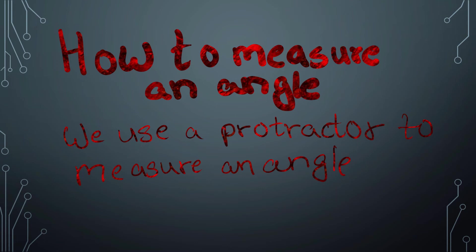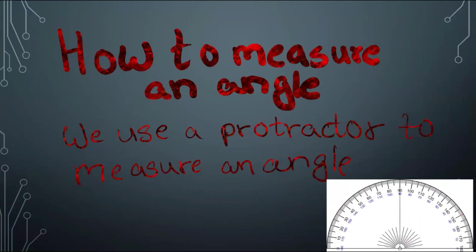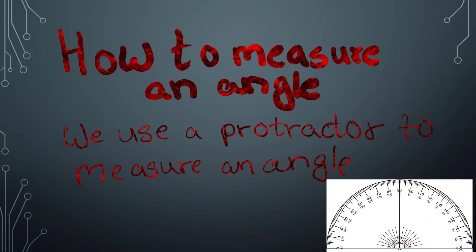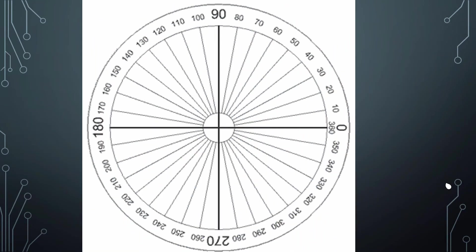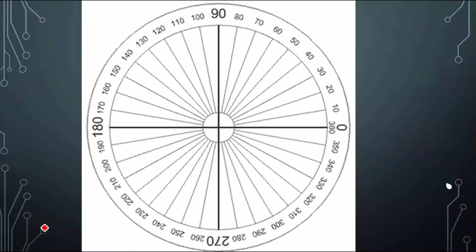How to measure an angle? We use a protractor to measure an angle. This over here is a protractor. This is a full 360 degree protractor.